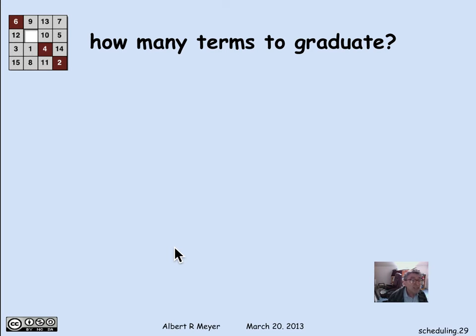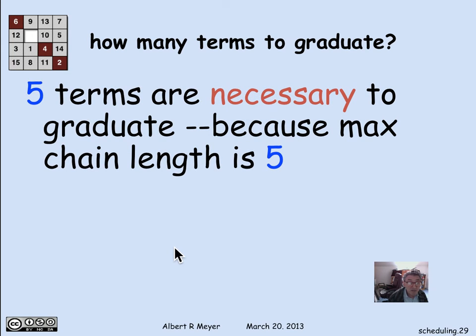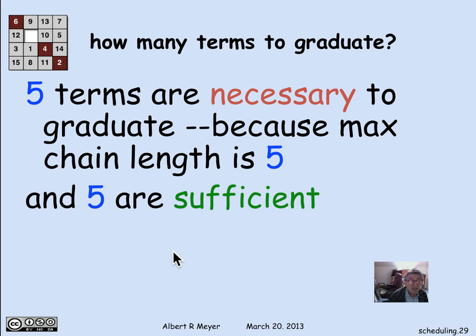And that leads us to the question of, how many terms is it necessarily going to take to graduate? Well, we saw that you can graduate in five. But given that there's a maximum chain of length five, it means that you can't do it in fewer, because those five courses have to be taken consecutively. The third has to be taken in a term after the first two have been taken. The second has to be taken after the first. If you have a chain of any size, actually, the number of terms to graduate has to be at least as big as that chain, which means it has to be at least as many terms as a maximum size chain. So five terms are necessary. And we saw, using our minimal strategy of being greedy, that you can always do it in maximum chain length. So five are also sufficient.